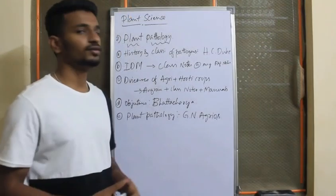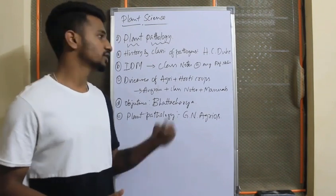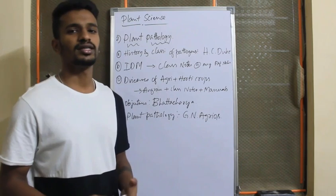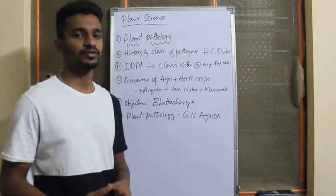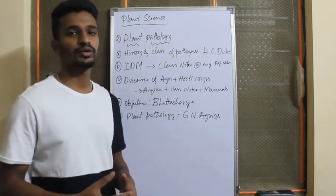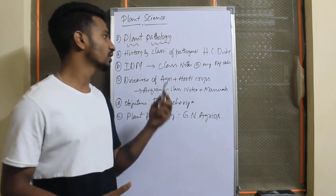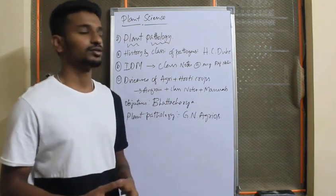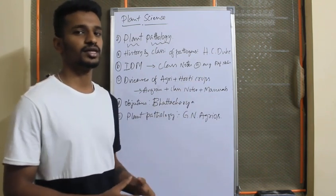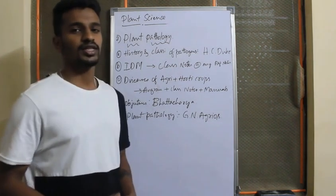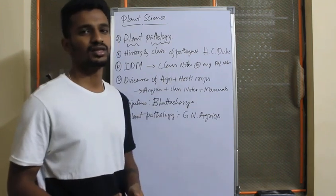The second subject is Plant Pathology. In plant pathology, the first course covers history and classification of pathogens. For this, the HCW book is very good — you need to read it, and reading it once will not help because there is a lot of confusion in the classification of pathogens. You need to read it twice or thrice and collect data from other sources to get clear clarification about pathogen classification. The second course is IDM — Integrated Disease Management. For this, class notes or any PDF notes from other sources are enough; there is not much to read for this topic.